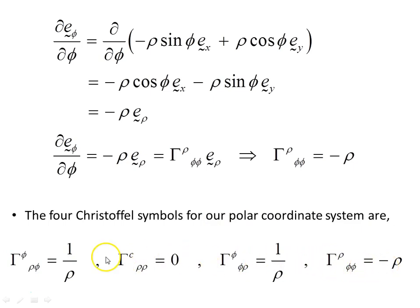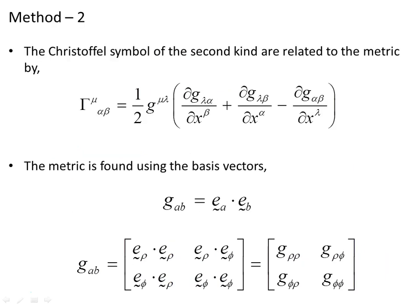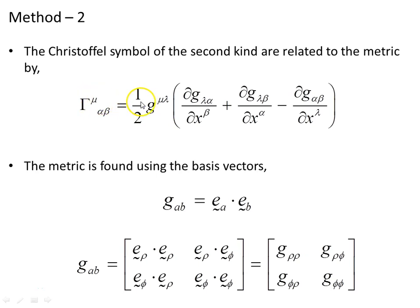So the four Christoffel symbols for our polar coordinate system are determined. Now the second method we could use involves the general formula for Christoffel symbols of the second kind, where we substitute for each index one at a time and systematically search through them. But first we need the metric.